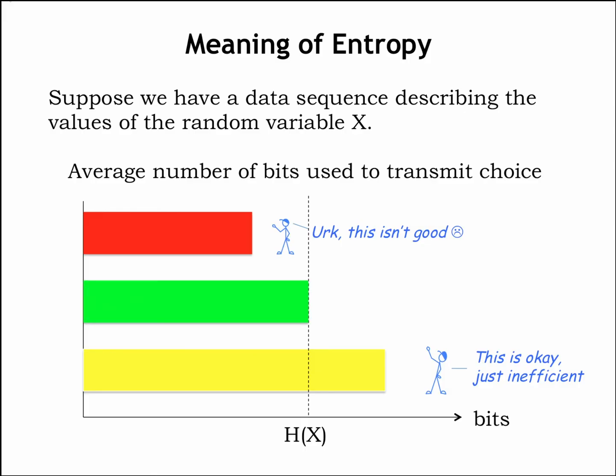Finally, if we send, on the average, exactly H(x) bits, then we'd have the perfect encoding. Alas, perfection is, as always, a tough goal, so most of the time we'll have to settle for getting close. In the final set of exercises for this section, try computing the entropy for various scenarios.